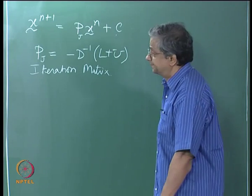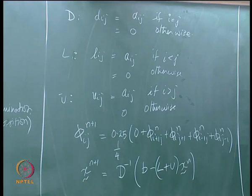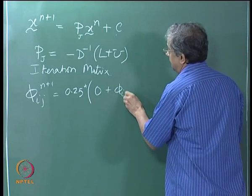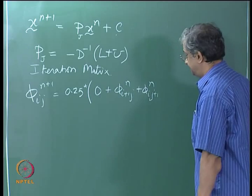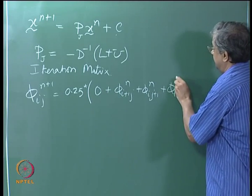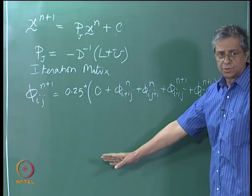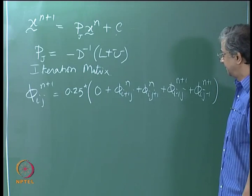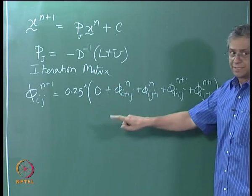What about Gauss-Seidel? In Gauss-Seidel, phi_ij at n+1 equals 0.25 times the sum: phi_{i+1,j}^n plus phi_{i,j+1}^n plus phi_{i-1,j}^{n+1} plus phi_{i,j-1}^{n+1}. This assumes we are sweeping from the lower left corner, left to right, bottom to top — there is an implicit assumption on the sweep direction. The n+1 terms come from the updated side.